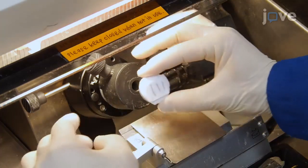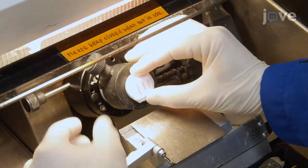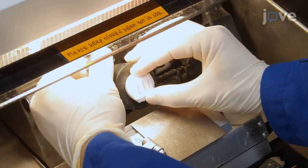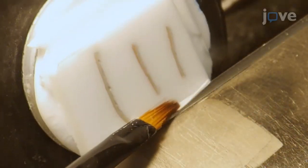For sectioning, using a cryostat set at negative 20 degrees Celsius, slice the tissue to create 7 to 10 micrometer thick sections for the best skin morphology.